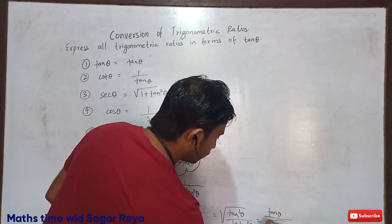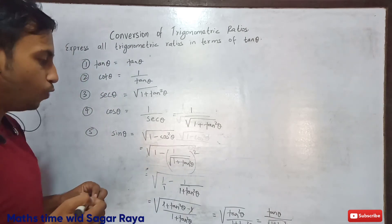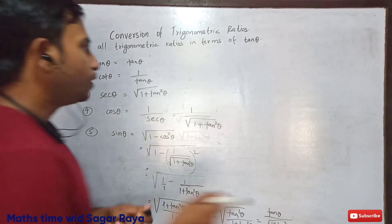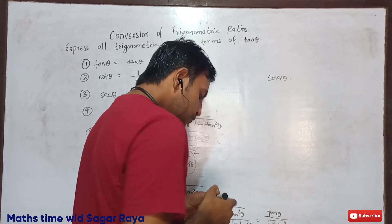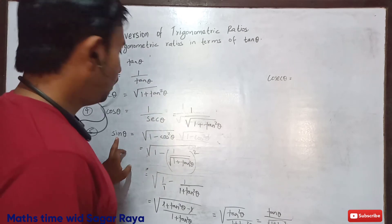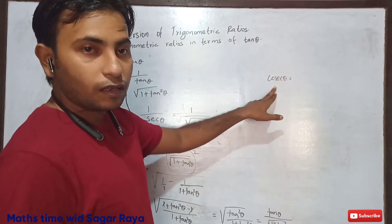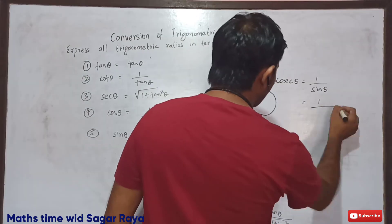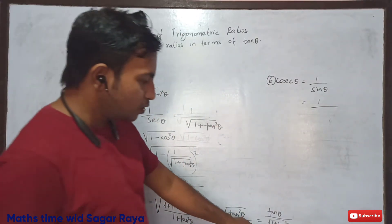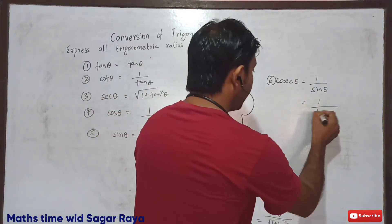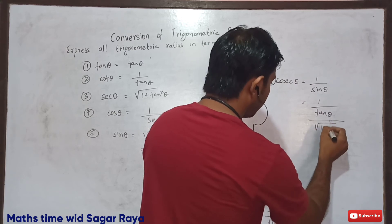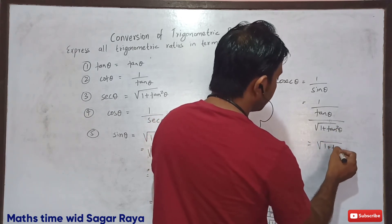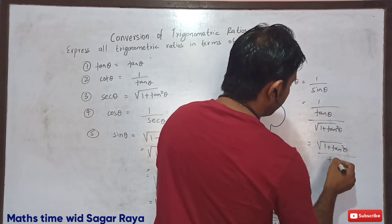Since we have found sin theta, we can find cosec theta as well, because cosec theta is the inverse of sin theta. So cosec theta equals 1 by sin theta. Substituting the value of sin theta, we get cosec theta equals 1 divided by tan theta over root under 1 plus tan squared theta. Multiplying, root under 1 plus tan squared theta goes to the numerator and tan theta remains in the denominator. So cosec theta equals root under 1 plus tan squared theta divided by tan theta.